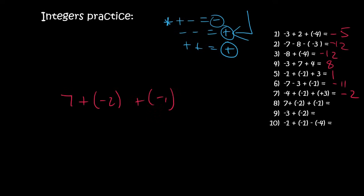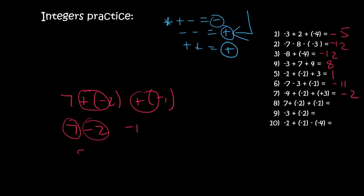Number eight. We have a plus and a minus, so that's going to be a minus. Then we have a plus and a minus — that's a minus. So you have seven rand, then you owe someone two rand — that's fine, you still have five rand. Then you owe someone another one rand — that's okay, you still have four rand left over.